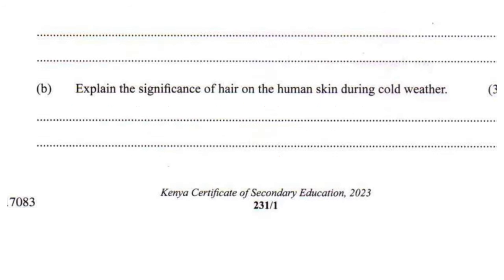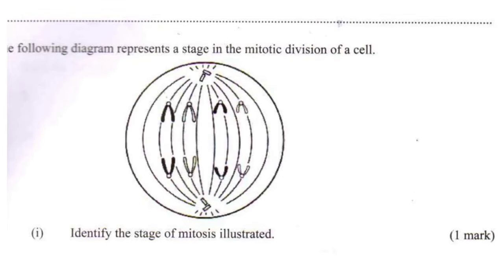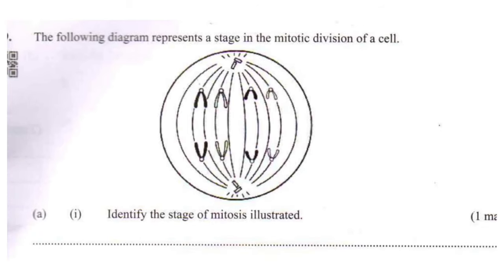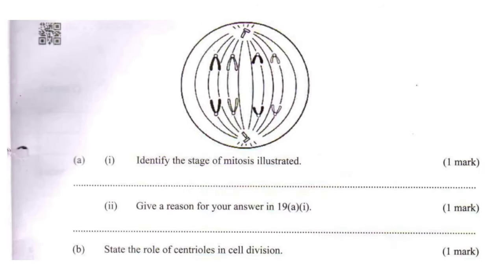Question 19: the following diagram represents a stage in the mitotic division of a cell. Part A Roman 1: identify the stage of mitosis illustrated. This stage is the anaphase stage — since this is mitosis, it is simply anaphase, not anaphase 1 or 2. The reason: the chromatids of each chromosome have separated and they are moving towards the opposite poles.